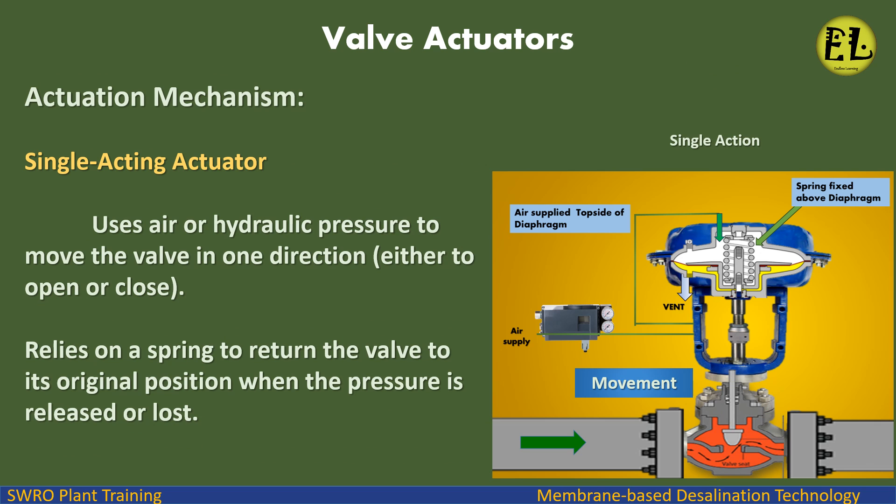Types of valve actuators — actuation mechanism. Single acting actuator: uses air or hydraulic pressure to move the valve in one direction, either to open or close. It relies on a spring to return the valve to its original position when the pressure is released or lost.